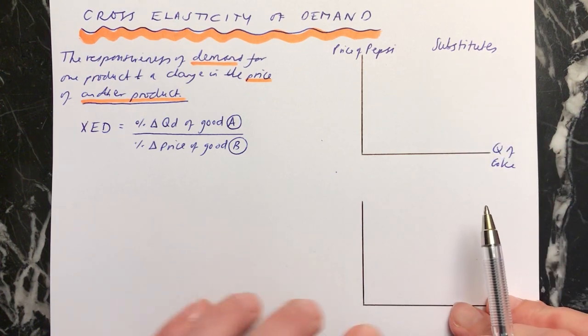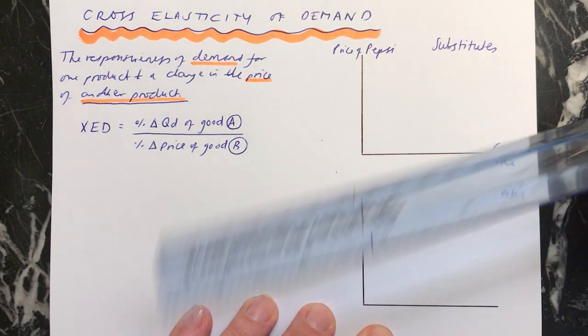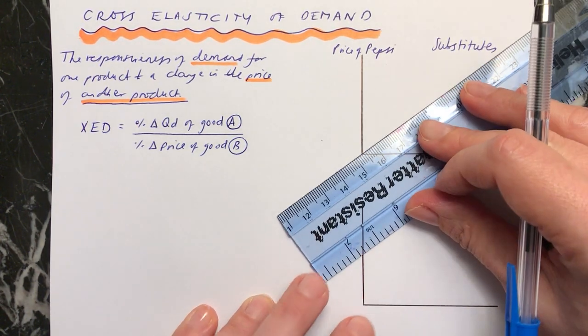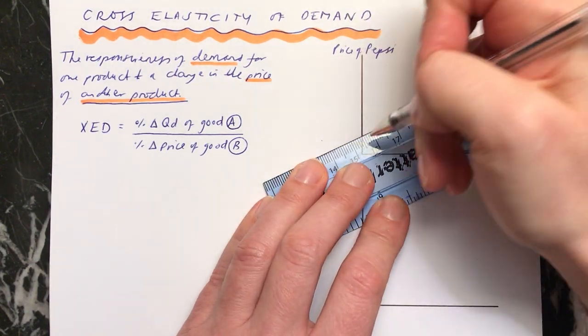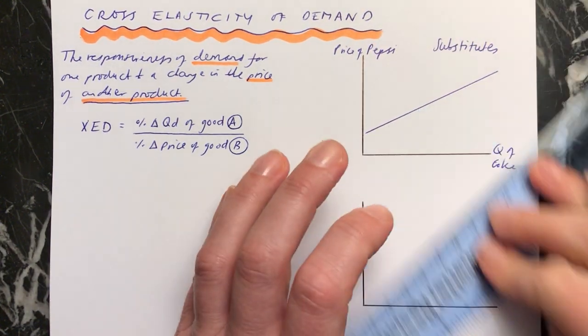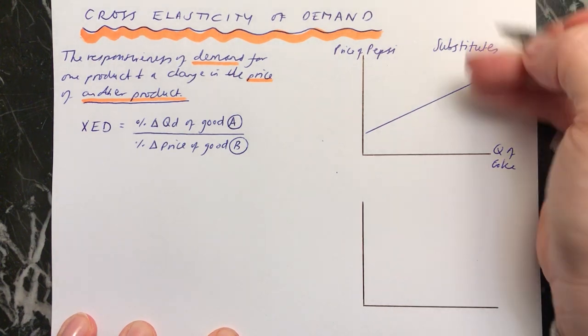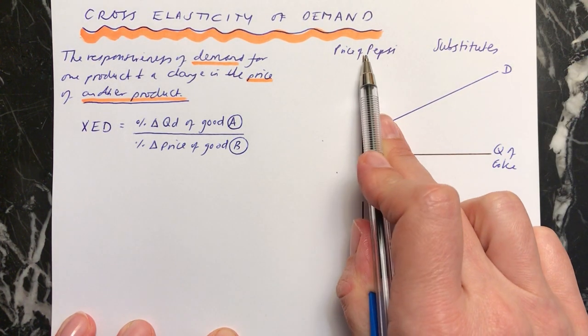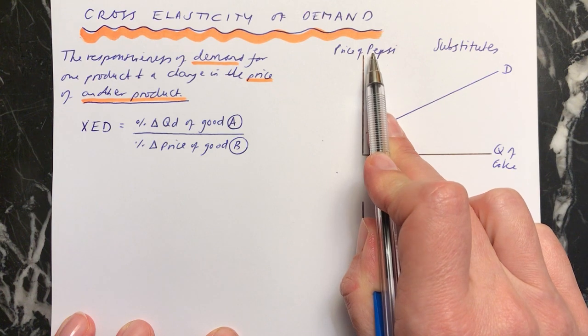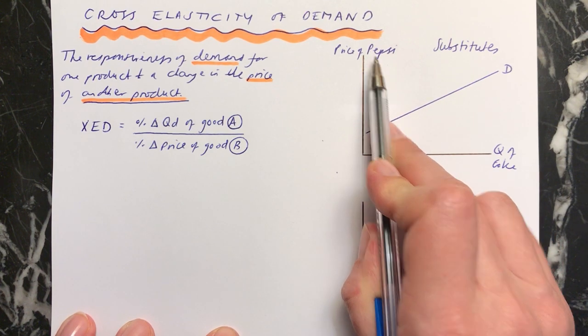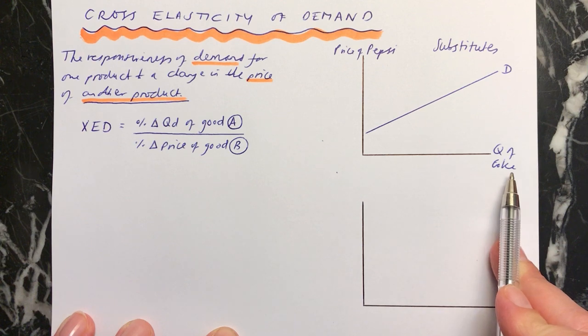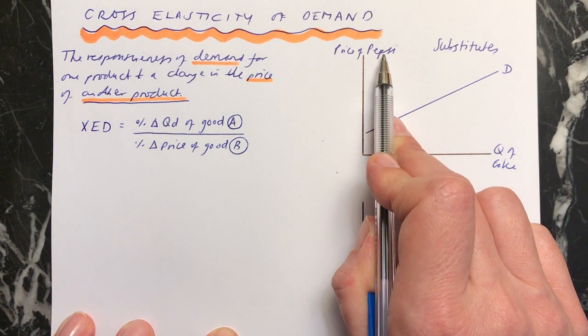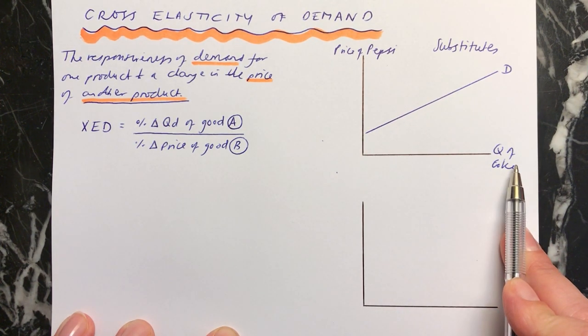The correlation between substitutes is a positive one, because as the price of one goes up, the quantity demanded of the other also goes up. You can imagine, if Pepsi becomes more expensive, some people will think, well, I won't buy Pepsi anymore, I'll buy Coke instead. So as the price of Pepsi goes up, the quantity demanded of Coke goes up.